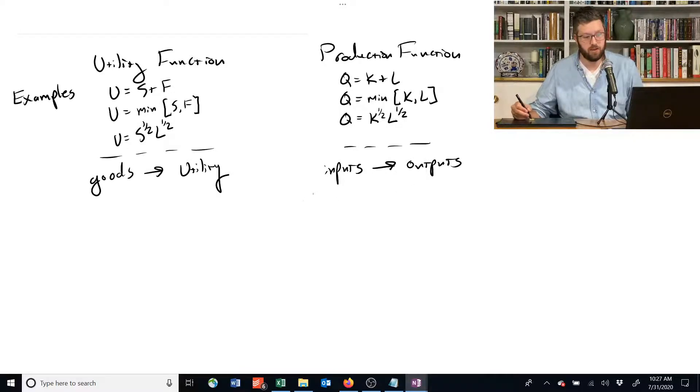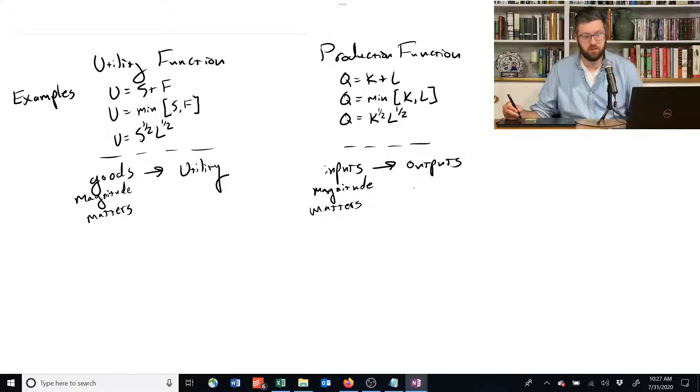For the inputs, the magnitude matters. So how much labor you use actually is important. And here we can say the magnitude also matters, so how much shelter you have matters. For production functions, the output also is important. So the magnitude matters.